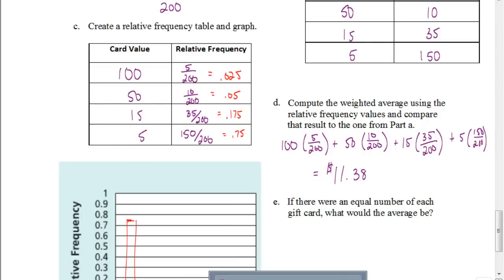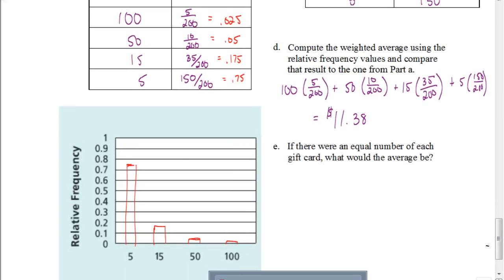Now for part E, if there were an equal number of each gift card, what would the average be? So if there were the same amount of each gift card, let's just say there was one of each, we would add up those values. So we would take one $100 gift card plus one $50 gift card and so on. And there's four numbers that we're adding together, so we would divide by four. And if you do that, you end up getting $42.50, which is a big difference.